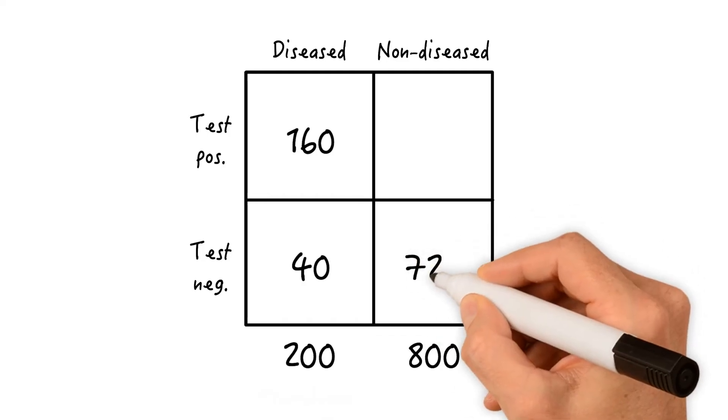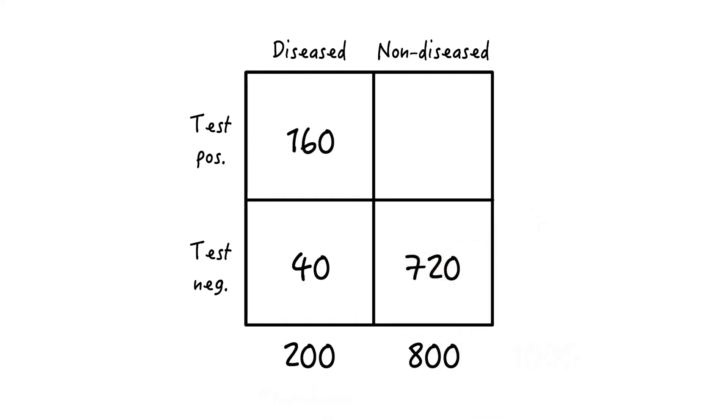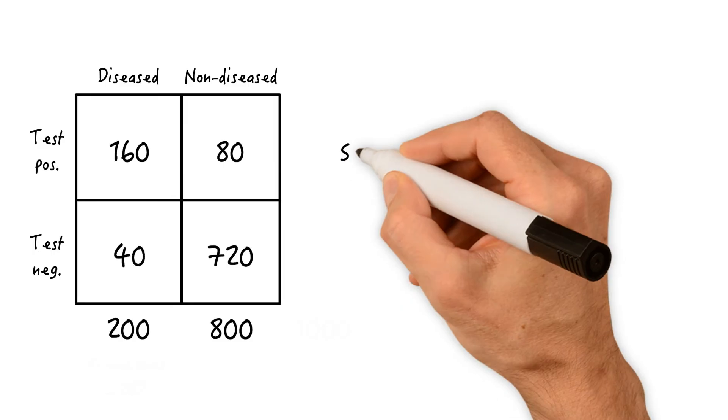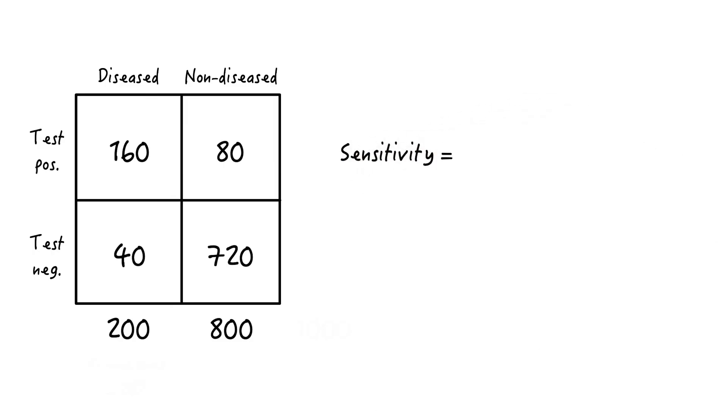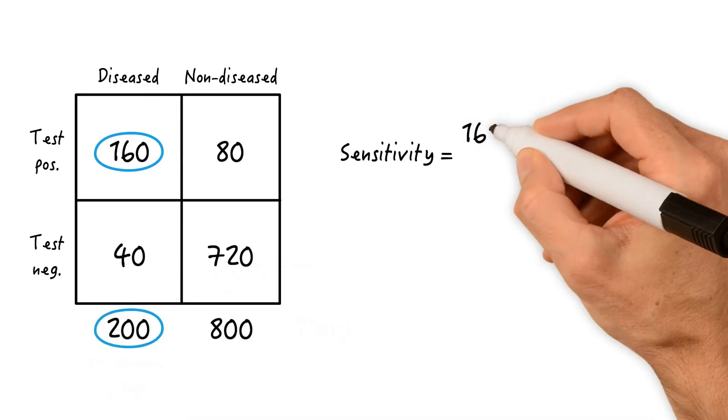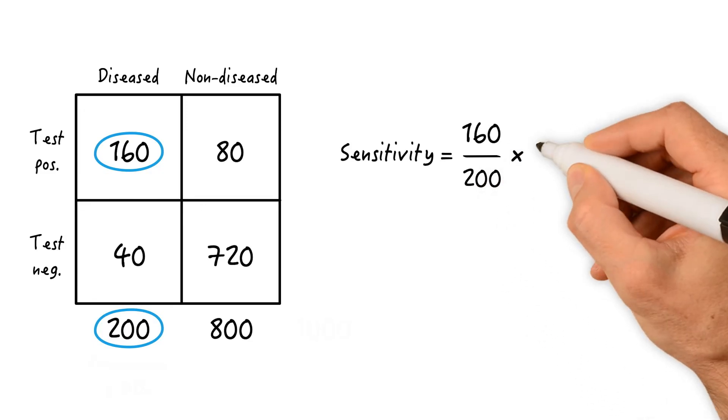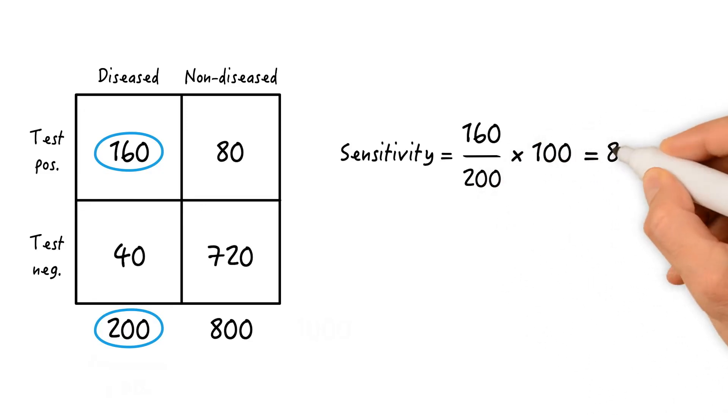On the other hand, 720 of non-diseased are correctly classified as negative by the test, whereas 80 are falsely classified as positive. The sensitivity of that test is calculated as the number of diseased that are correctly classified divided by all diseased individuals. So 160 divided by 200 times 100 and that equals 80%.